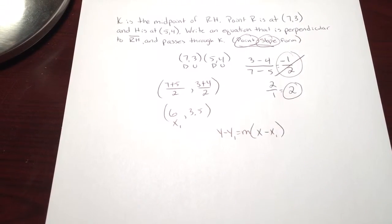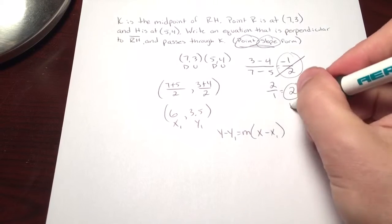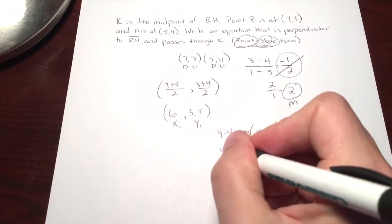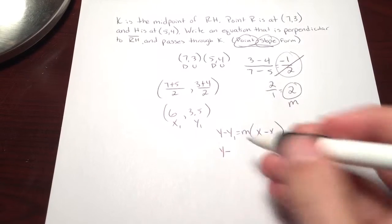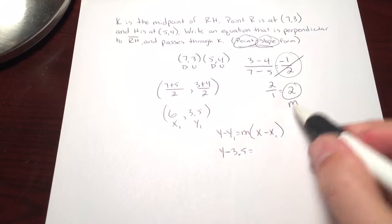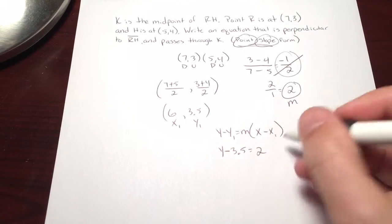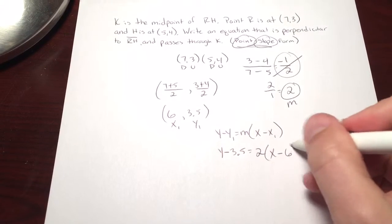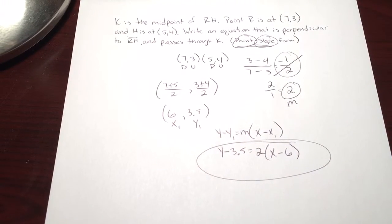You got your X1 here, your Y1 there, and your M right here. Just drop it all in. So Y minus Y1, 3.5, equals M, the new perpendicular slope of 2, and X minus X1, which was 6. And there you go.